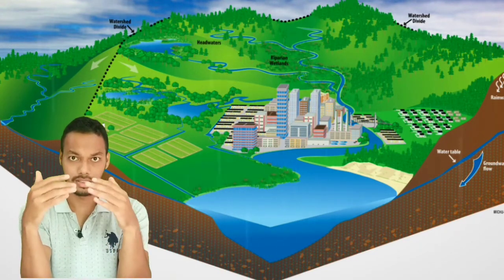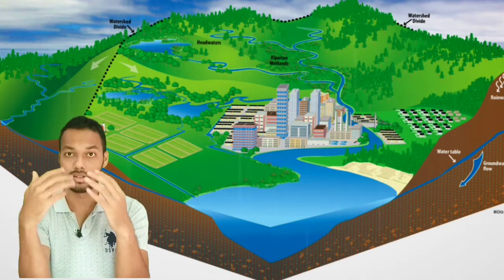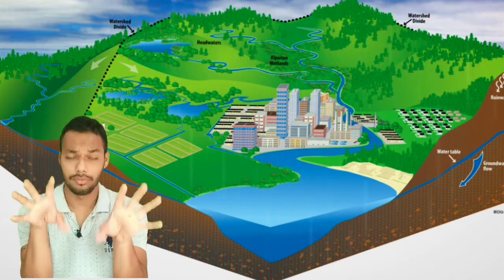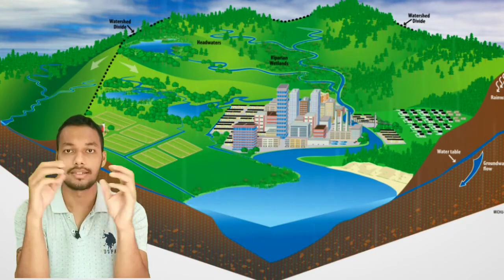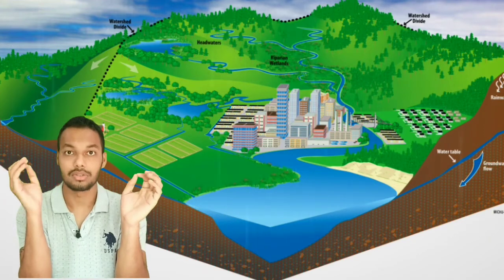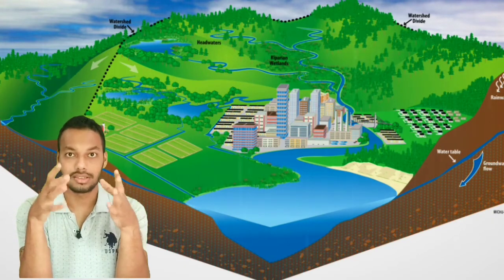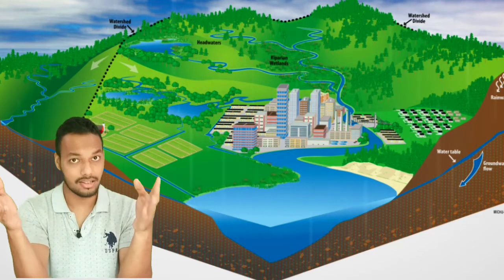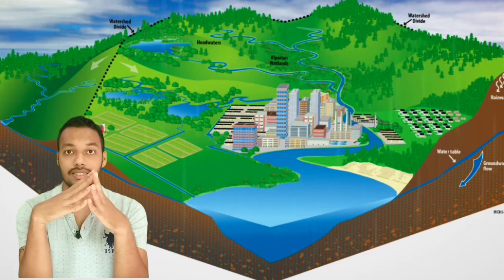For implementation of watershed in a particular area, we have different steps. The basic purpose of watershed is to collect maximum water, reduce the runoff, control floods and droughts in the particular area, and to have assured irrigation and develop irrigation projects.